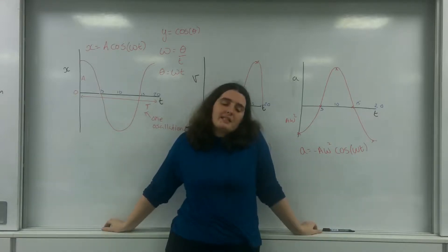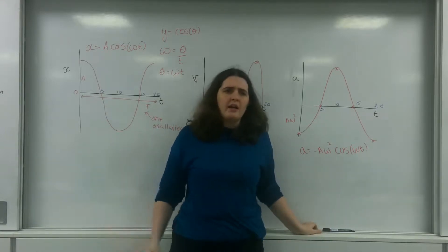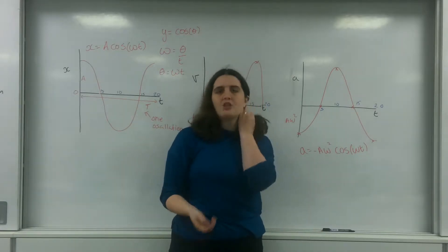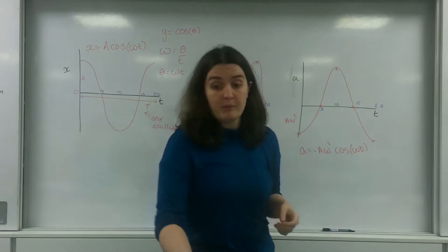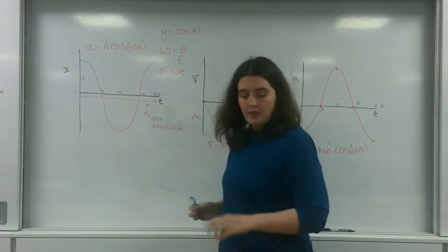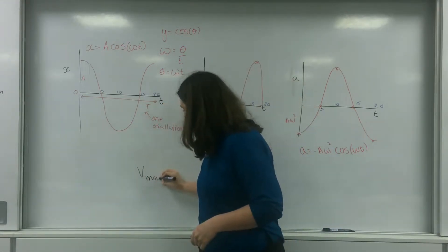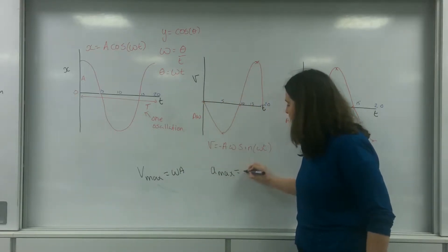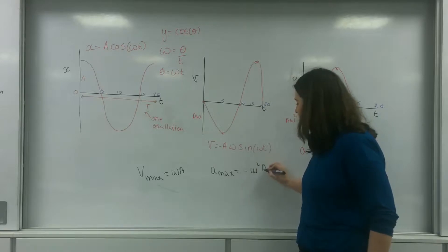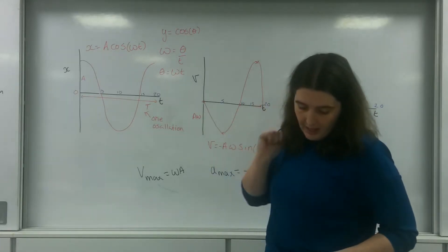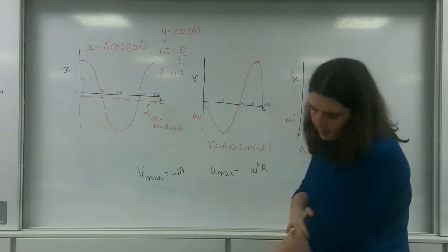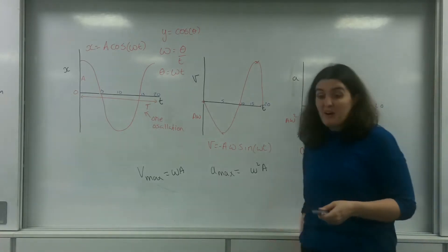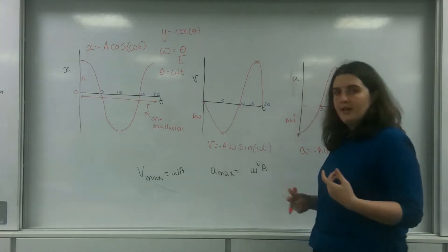Good afternoon and welcome to TL Physics. Today I'm going to talk about how you get the equations for maximum velocity and maximum acceleration for simple harmonic motion. On your datasheet you can see that Vmax is omega A, and Amax is omega squared A — not minus, just A because we're looking at the magnitude here. What I want to talk about is where it comes from and why that is true.